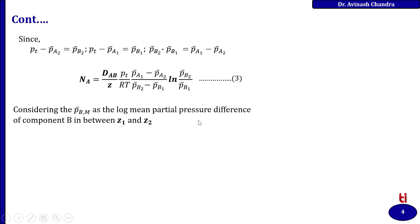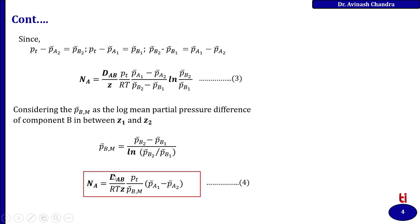Where Pbm is the log mean partial pressure difference of component B between Z1 and Z2, defined as Pbm = (Pb2 − Pb1) / ln(Pb2 / Pb1). Pb1 is the partial pressure of component B at position 1, and Pb2 is the partial pressure of component B at position 2. Substituting into equation 3 gives the final expression: N = (Dab / RTZ) × (Pt / Pbm) × (Pa1 − Pa2). This is the expression for diffusion of component A through non-diffusing B for a gas.